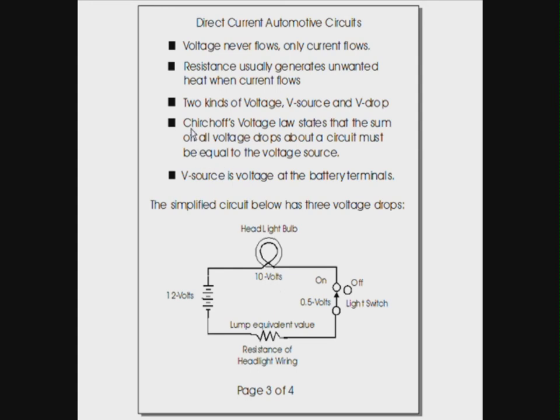And the next item, Kirchhoff's voltage law states that the sum of all voltage drops about a circuit must be equal to the voltage source. So 12 volts is the voltage source. This 10 volts plus this .5 volts plus this unknown has to equal 12 volts, according to Kirchhoff's voltage law. So just looking at that, we know 10 and a half from 12 is what? 1.5 volts must be across the resistance of the headlight wiring. Just using Kirchhoff's voltage law.